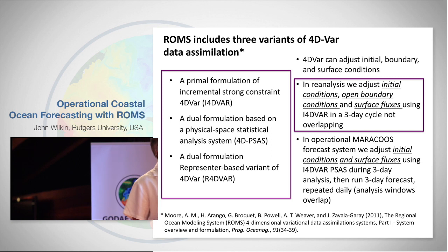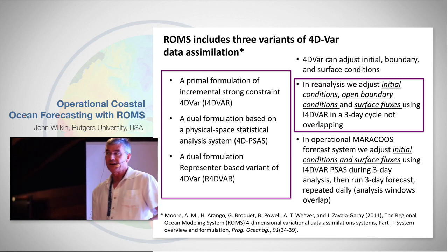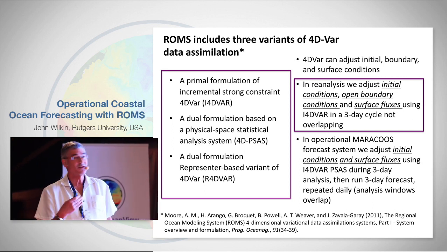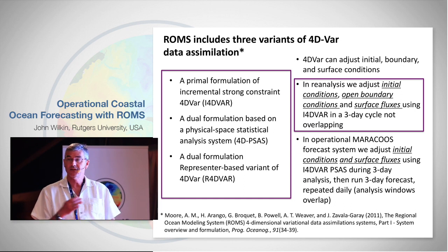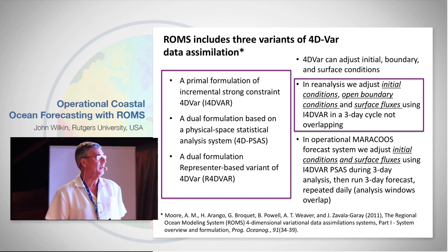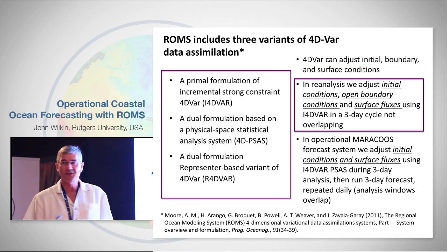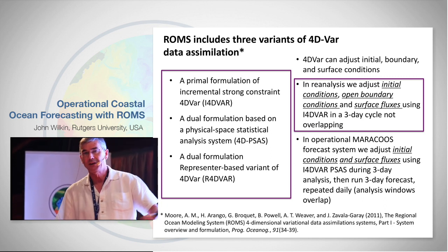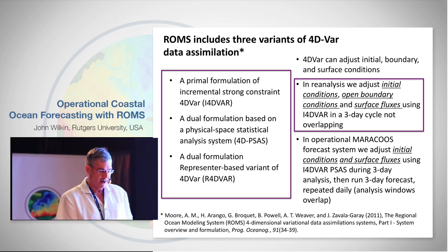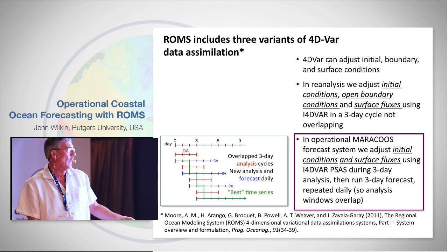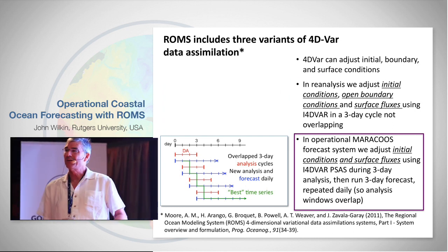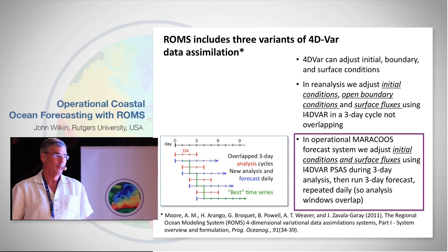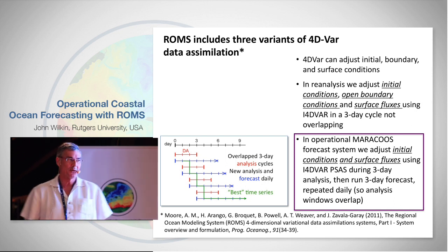When we're doing reanalyses, our control variables — the things we are adjusting — are the initial conditions at the beginning of the analysis interval, but we also adjust the open boundary conditions and the surface forcing. When doing reanalyses, we do three days of assimilation — Jean-Michel described seven days in the case of Mercator. In the operational system, we redo this every day, so we recycle observations. There are reasons you shouldn't do that strictly speaking, but I'm an engineer and it kind of works.